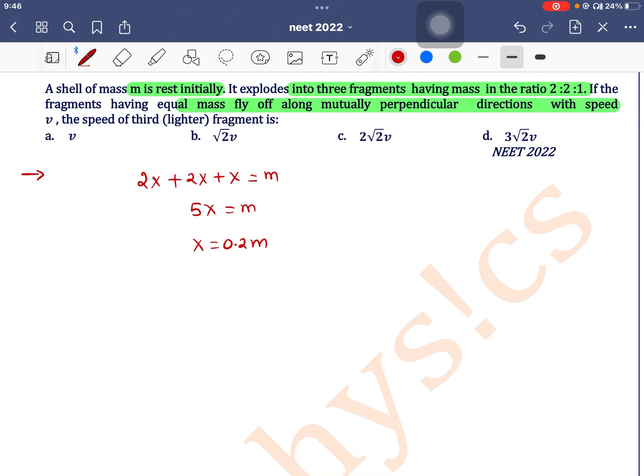So the mass m₁ can be written as m₁ = 2x = 0.4m. The value of x is 0.2m. m₂ = 2x = 0.4m and m₃ = x = 0.2m. So m₁ and m₂ have same masses, m₃ has 0.2m.